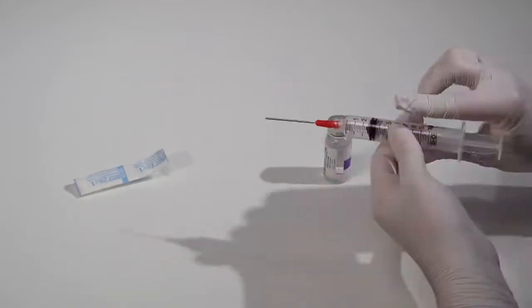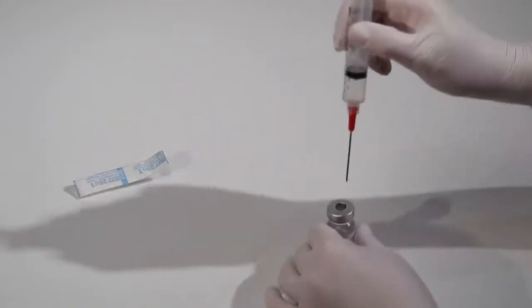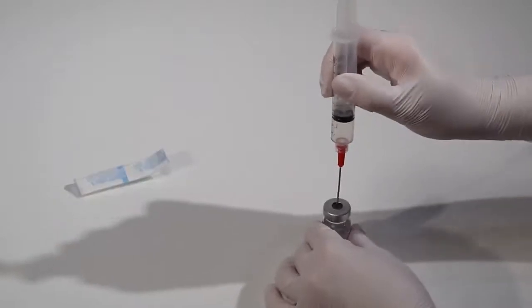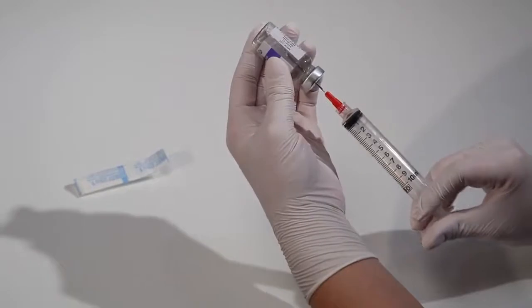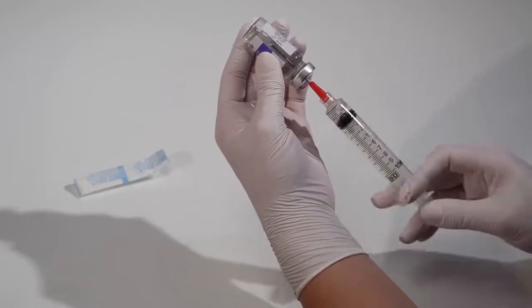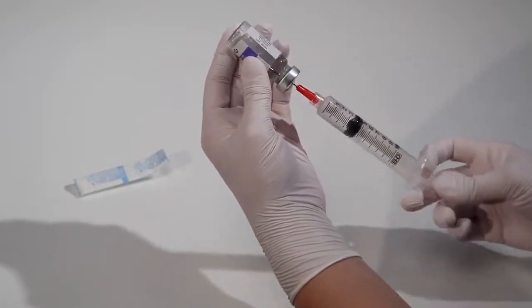Insert the needle into the center or thinnest part of the vial stopper and inject air. Remember that over-pressurizing the vial can lead to leakage or spray. Then, hold the vial upside down while keeping the needle tip in the fluid.